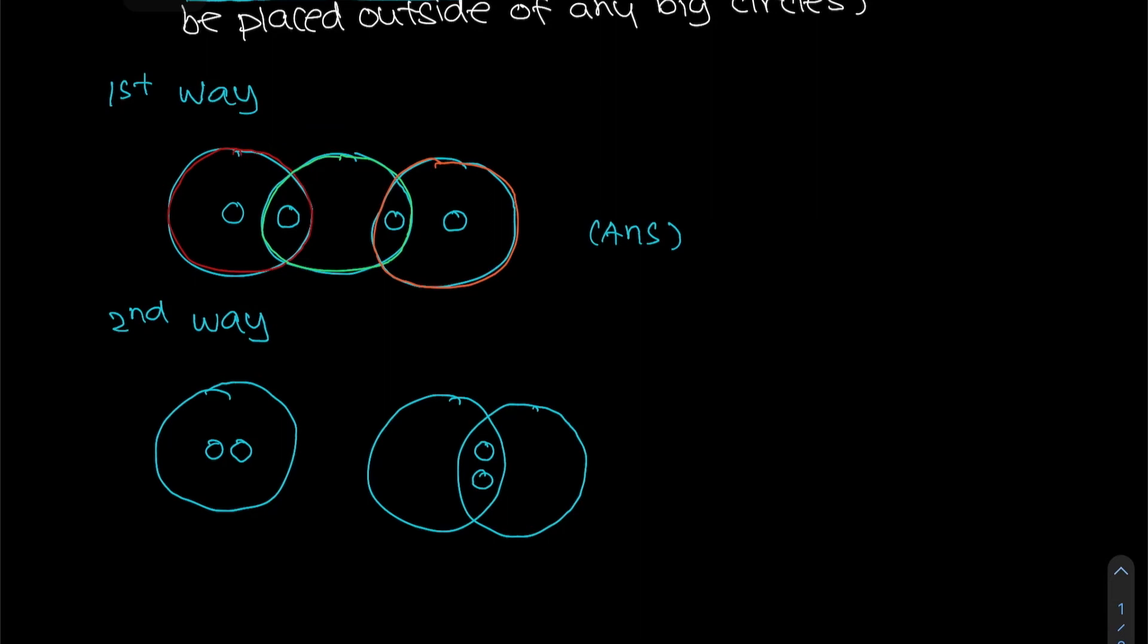So actually, why is this important? Because the overlapping region is what makes this question beautiful. The small circles within the overlapping region is actually shared among the big circles. So same thing over here in the second way.